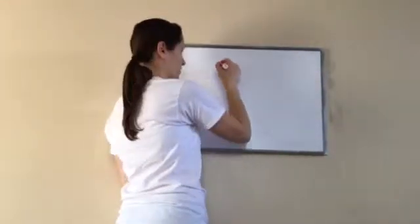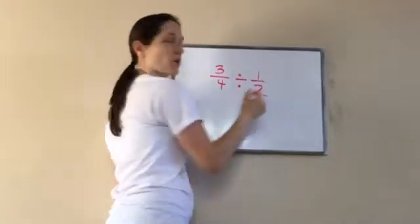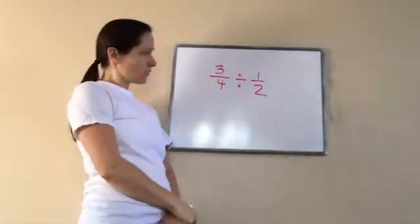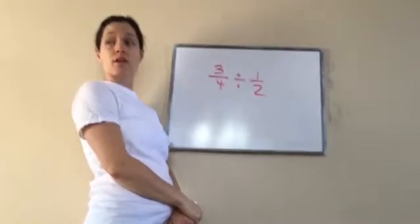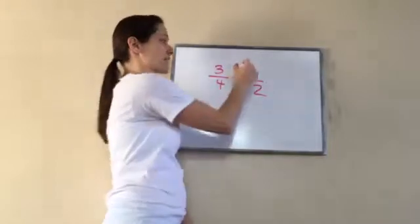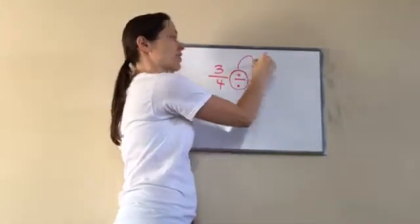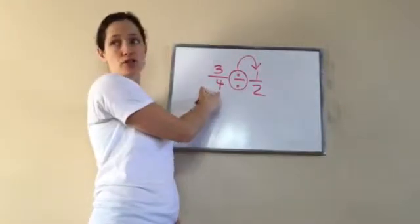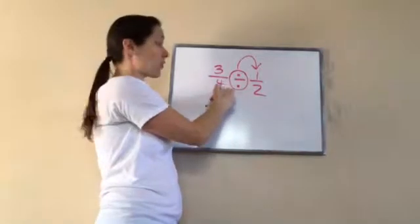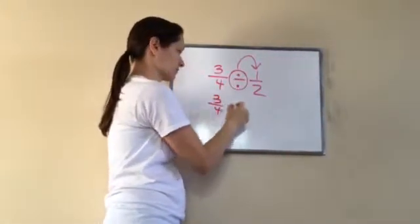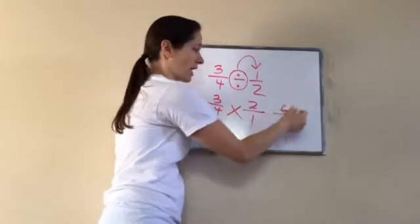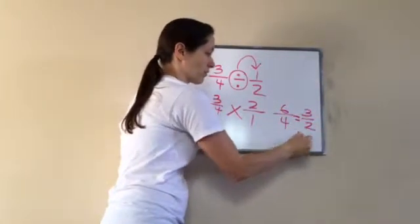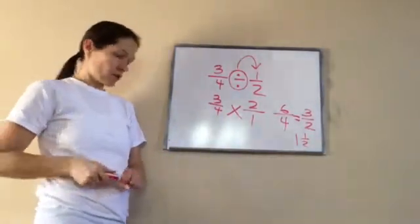Now let's move to dividing fractions. Remember something like: 3 fourths divided by 1 half. Do you remember what we do? You use the reciprocal and multiply. You always change the fraction to the right — never the fraction to the left. So it becomes 3 fourths times 2 over 1. 3 times 2 is 6, and 4 times 1 is 4. We reduce that to get 3 halves, which becomes 1 and 1 half.